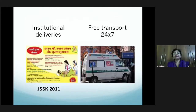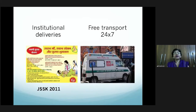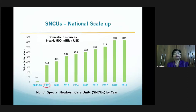With institutional deliveries increasing exponentially — largely because of the Janani Shishu Suraksha Karyakram launched in 2011, which provides incentives for pregnant women to deliver institutionally — more babies are admitted to SNCUs when they need care. The government has also provided free 24x7 transport through a well-developed call center system, so babies can be quickly transported from any delivery site, private or government, to a Sick Newborn Care Unit.